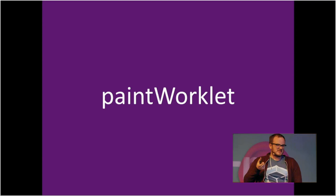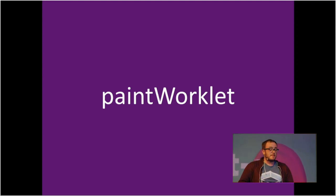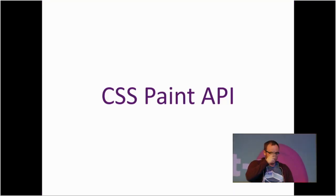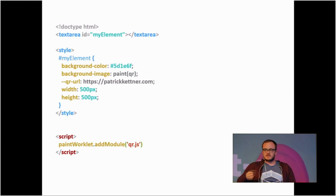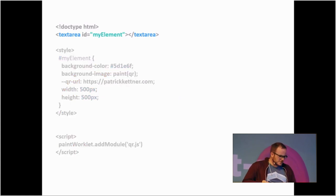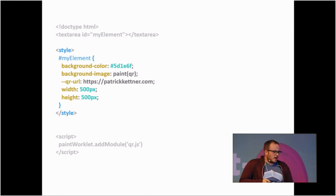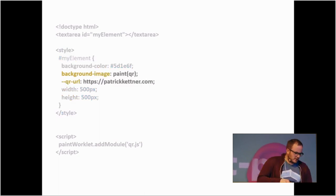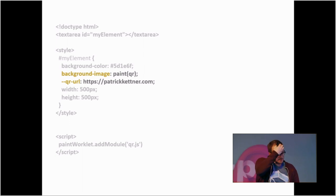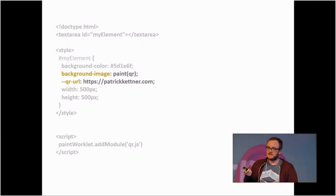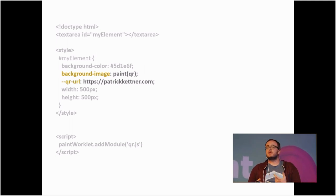The next worklet is a lot simpler to understand: the paint worklet, officially called the CSS Paint API. The way to use it is pretty similar to the layout API. You create a simple element, define some normal CSS, and then define a couple of custom things. You have a new function — in this case, the paint function. The paint API can be called anywhere you would normally use an image, so a background image is a really common case.